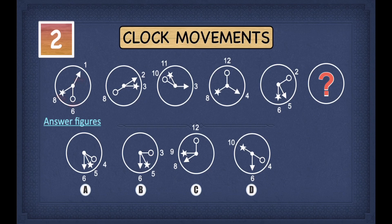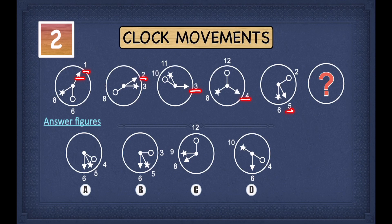Let's start with the arrow first. In the first diagram, the arrow is pointing towards 1. In the second, it points towards 2. In the third, towards 3. In the fourth, towards 4. And in the fifth diagram, it is pointing towards 5. To get from 1 to 2 we add 1, from 2 to 3 add 1, from 3 to 4 add 1, and from 4 to 5 add 1.